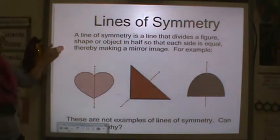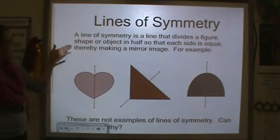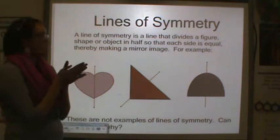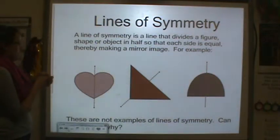Line symmetry. A line of symmetry is a line that divides a figure, a shape, or object in half, so that each side is equal, thereby making a mirror image.